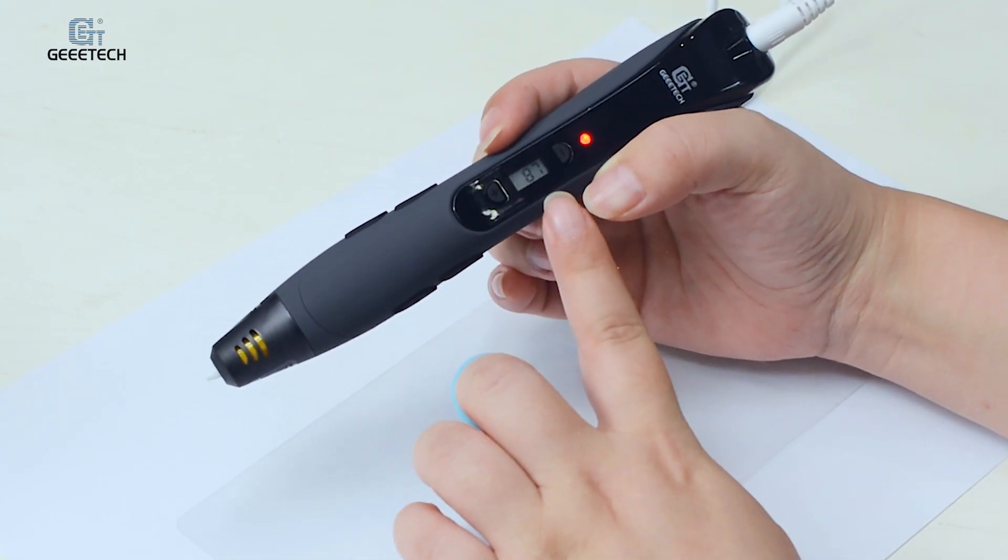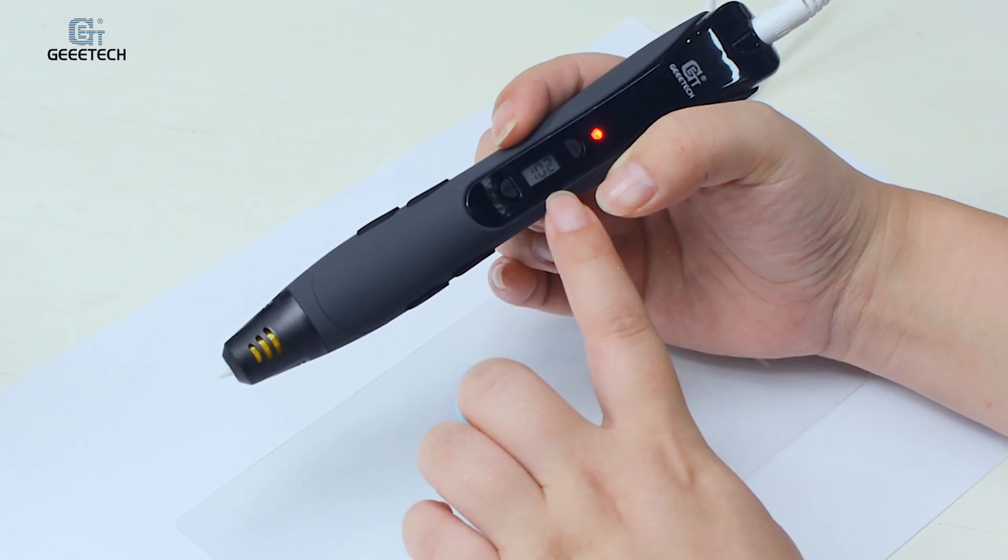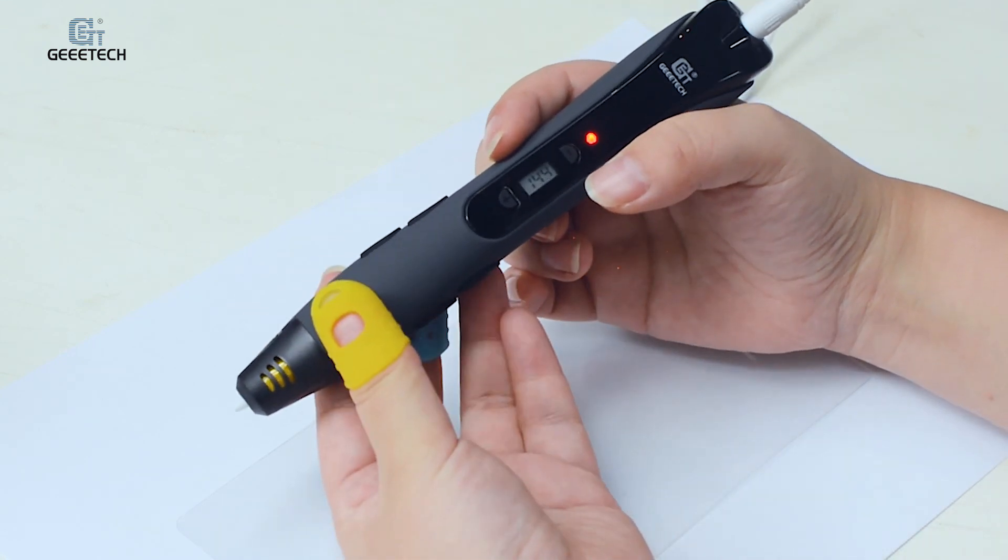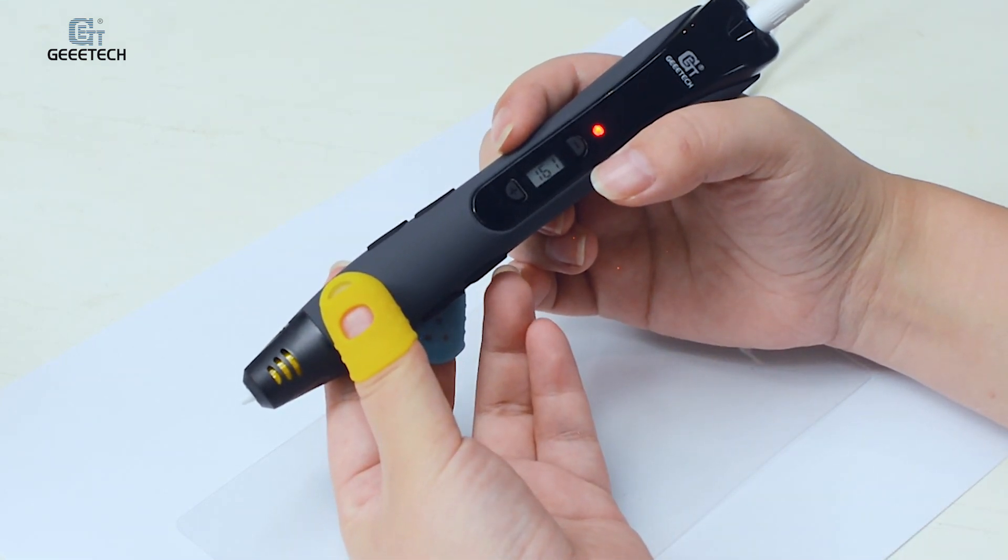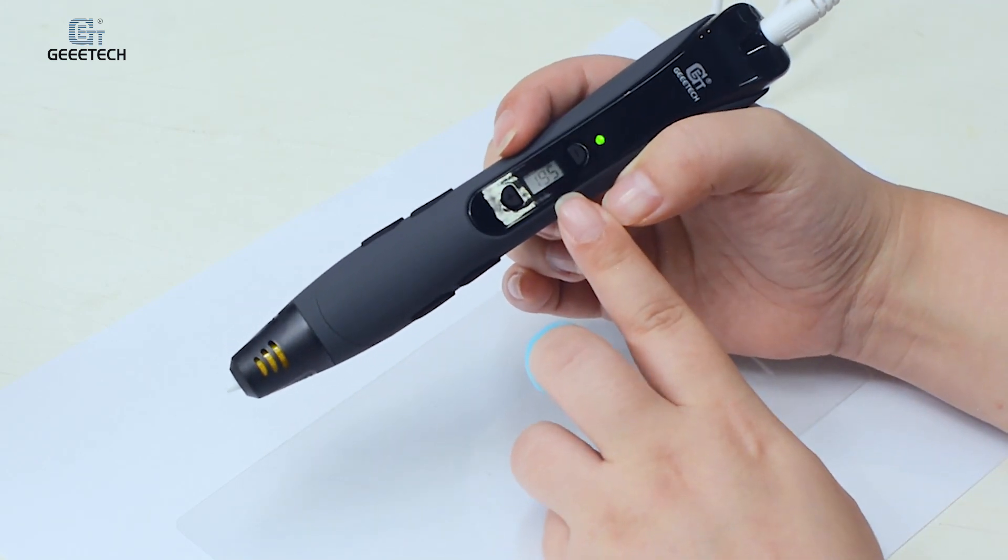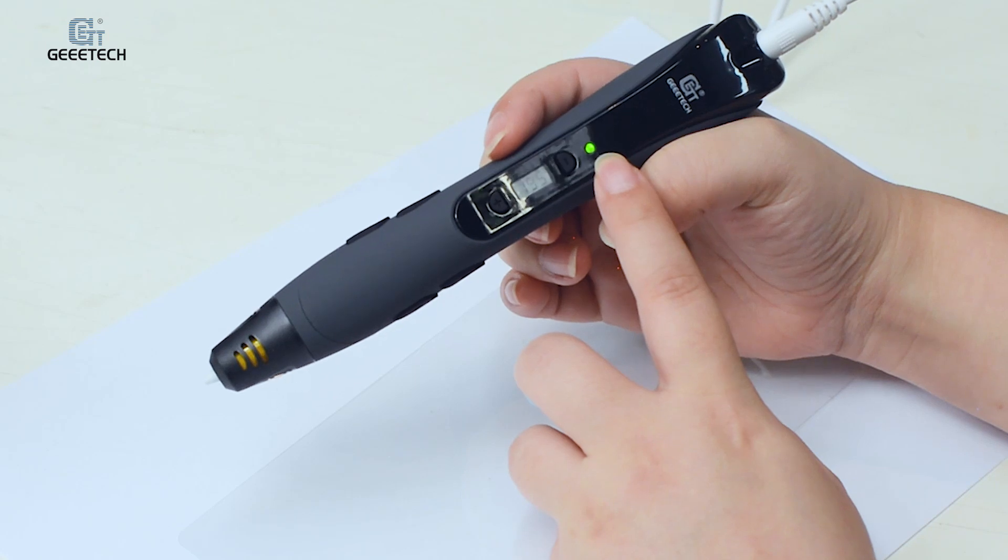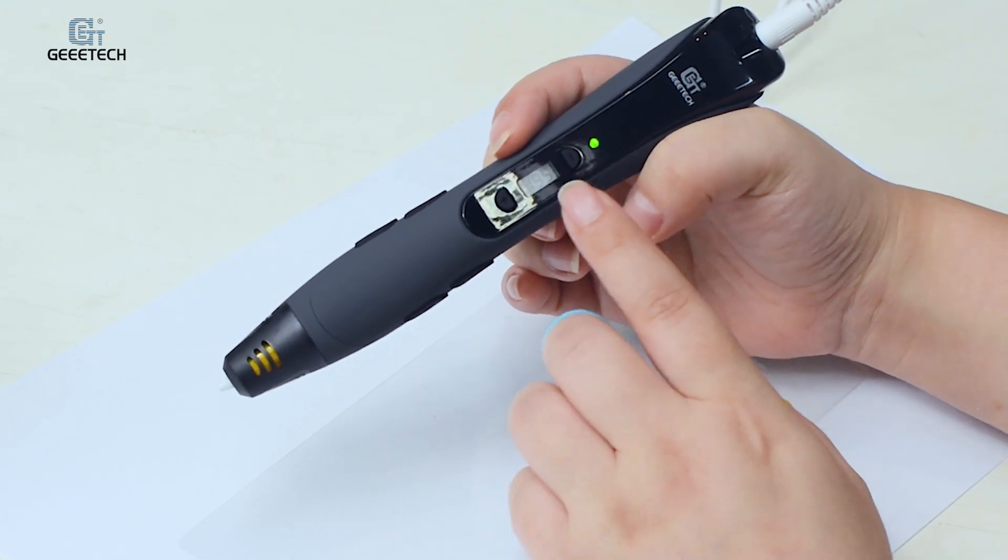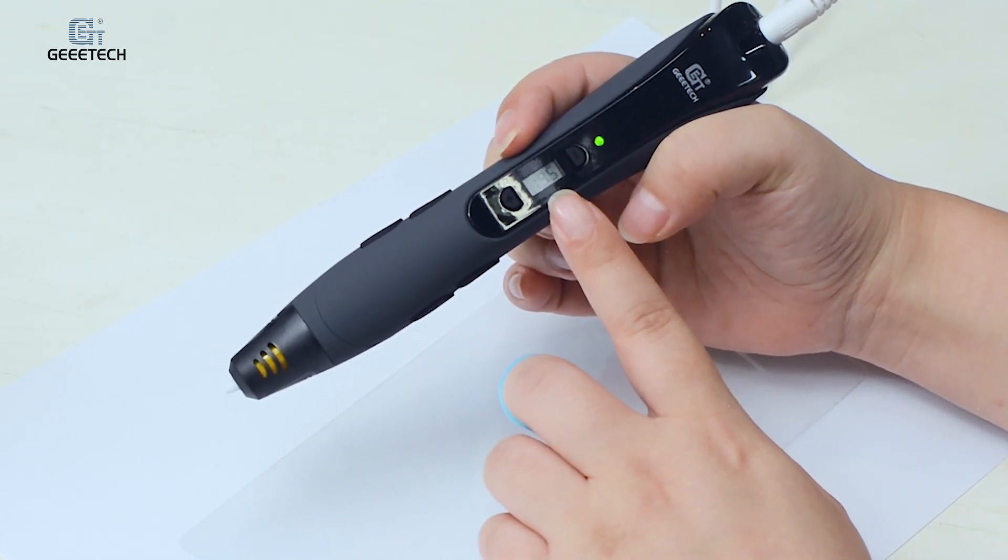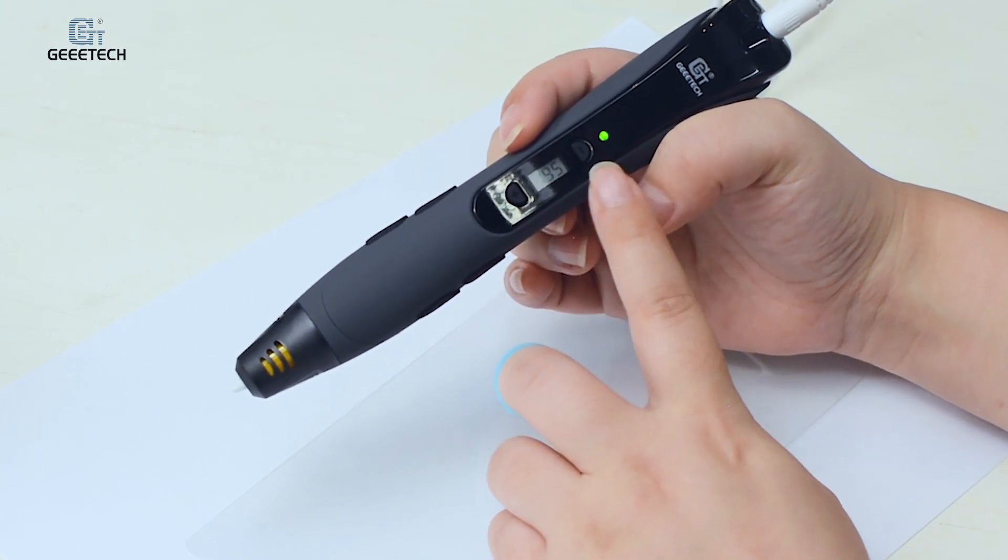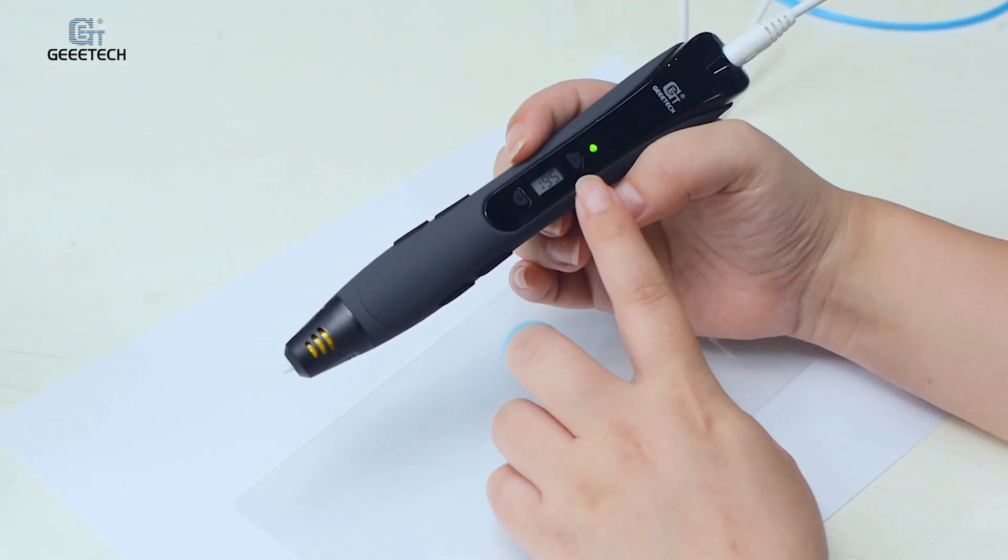The temperature preheating speed is very fast. Now we finish the preheating and there is a working LED on the screen. If you think the temperature is not enough or too high, you can use these two buttons to adjust the temperature.